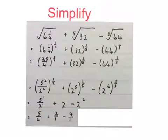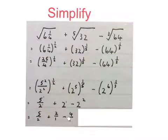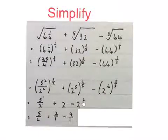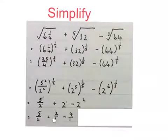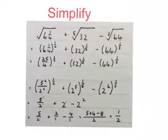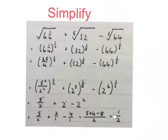Because I now see a fraction in this calculation, I change everything to fractions. 5 over 2 stays. The 2 becomes 2 over 1 and the 2 to the power of 2 becomes 4 over 1. Then I add these fractions, and my final answer is a half.